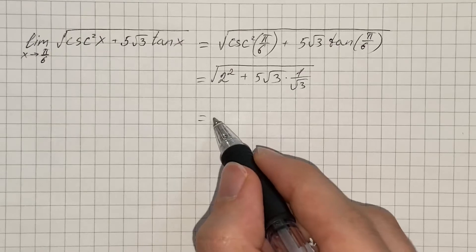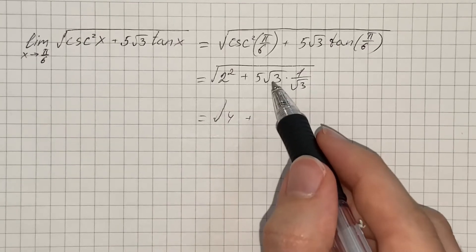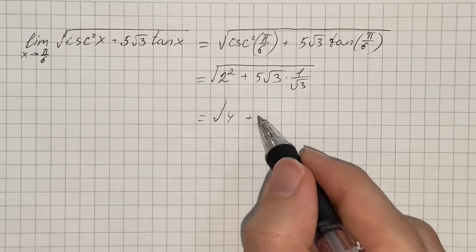Therefore we get 2² equals 4 plus, and here we can cancel out √3 and we get just 5.